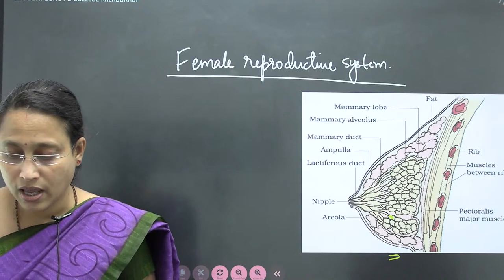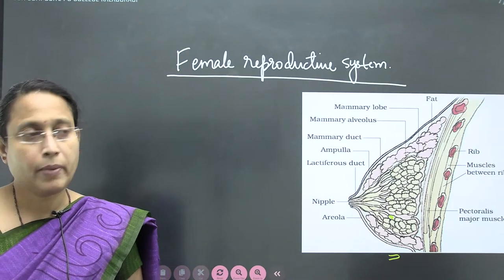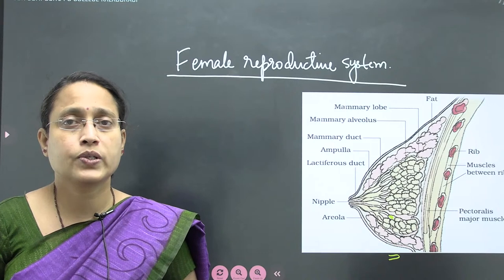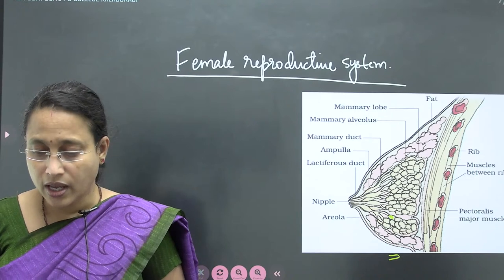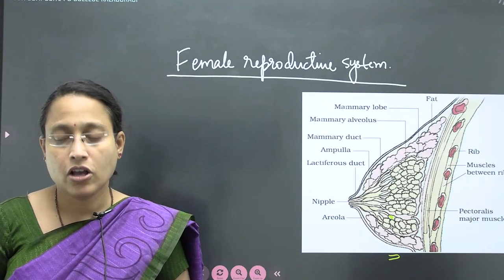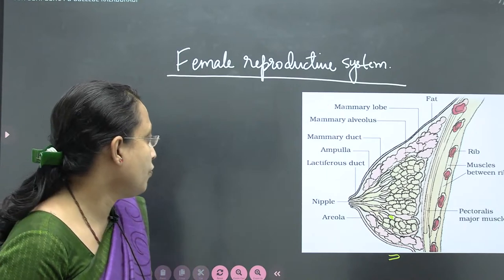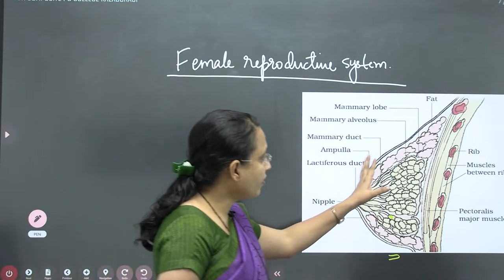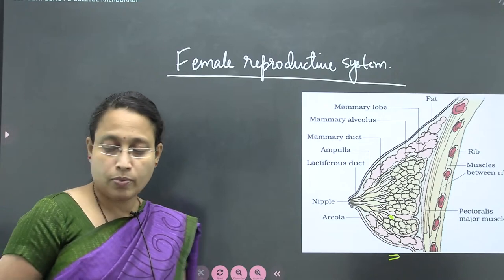Additionally, one of the germ layers that contributes to the formation of mammary glands is the ectoderm. Now, going to what are the different parts of mammary glands: I mentioned it is a prominence, but within this prominence various other structures are present.